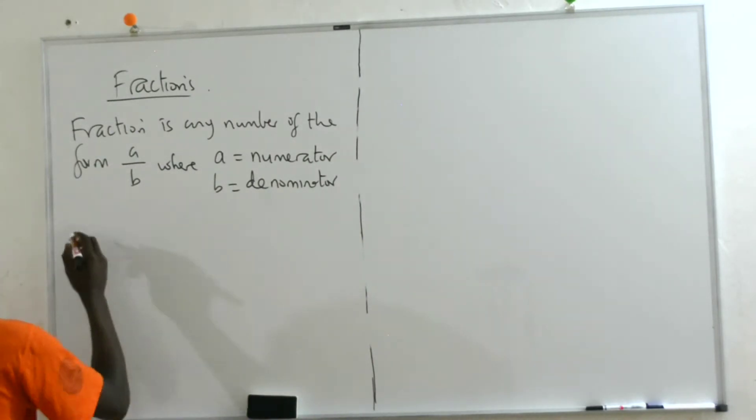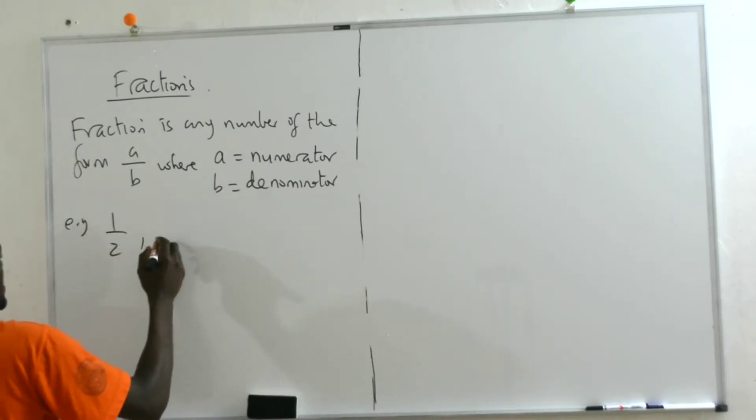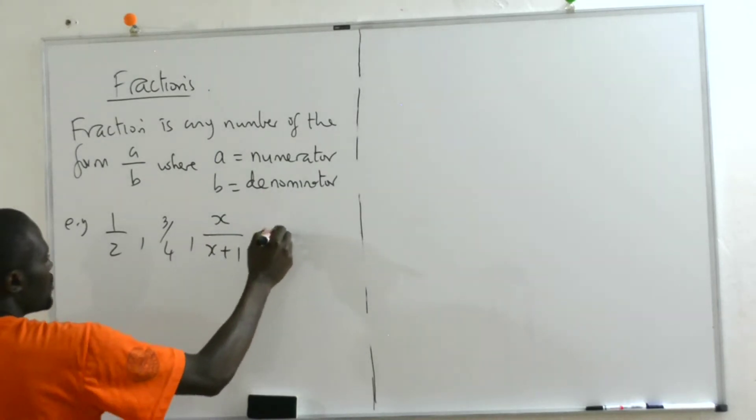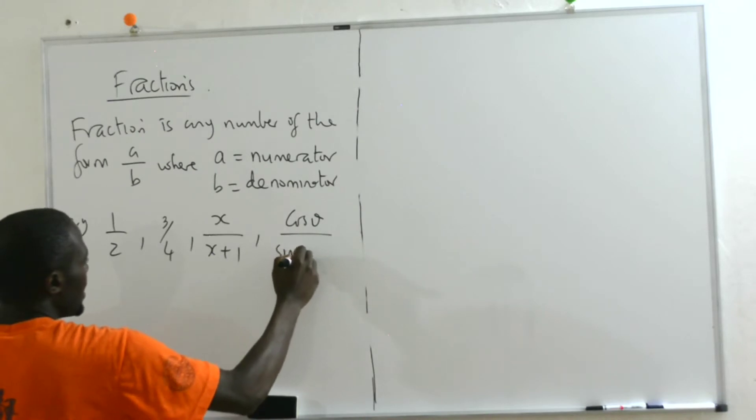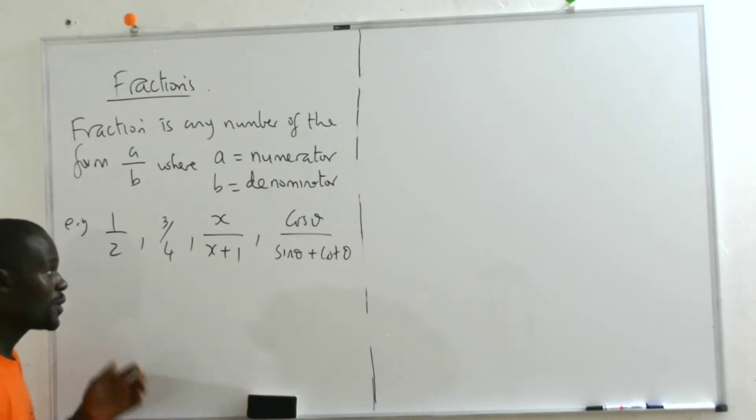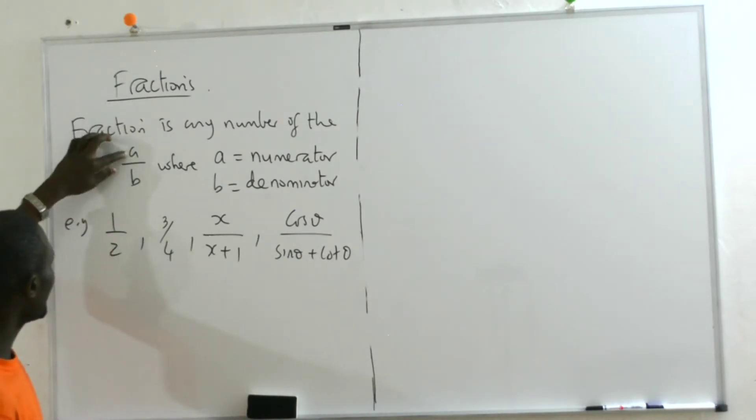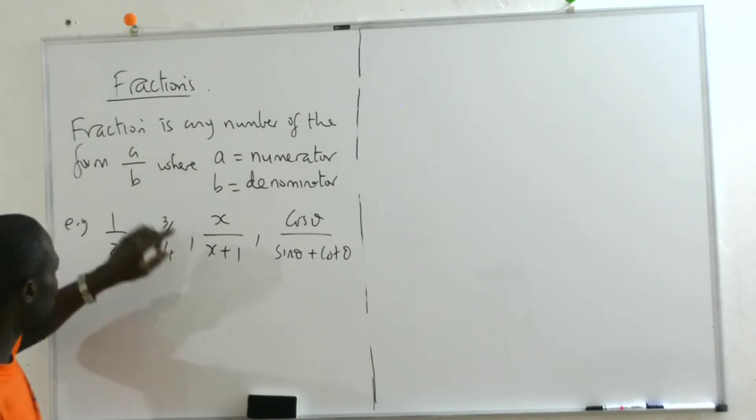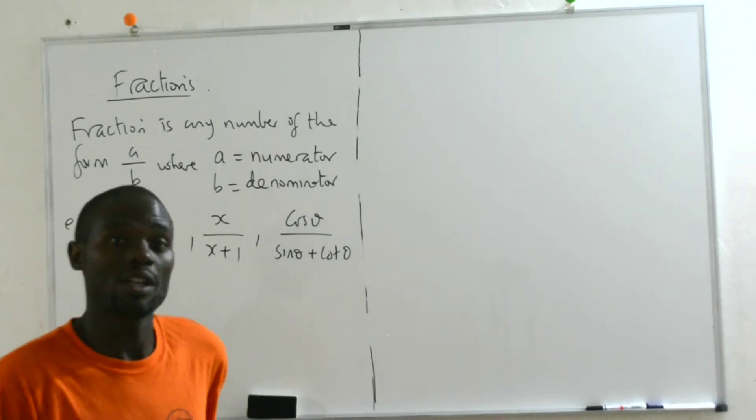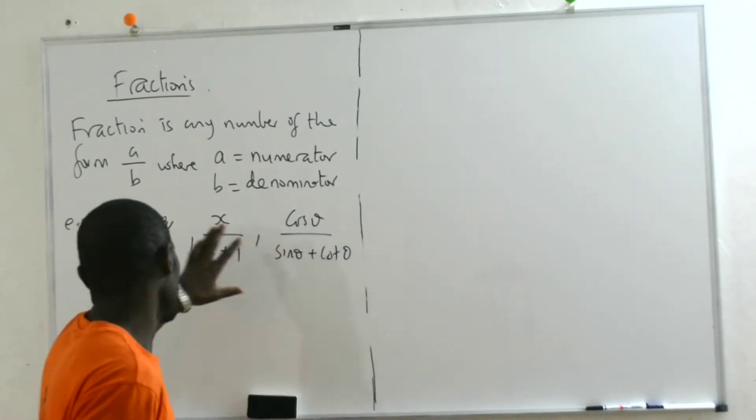So when we say numerator, we mean anything above that line and denominator down. So a fraction would be this: it could be 3 over 4, it could be X out of X plus 1, it could be cos theta out of sin theta plus cos theta.